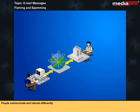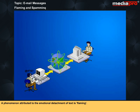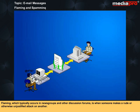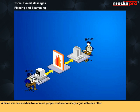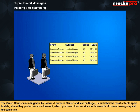People communicate and interact differently. Blunt remarks, ignoring of social boundaries, inadvertent revelation of personal information, insults and alienation all become common over computer networks. A phenomenon attributed to the emotional detachment of text is flaming. Flaming, which typically occurs in newsgroups and other discussion forums, is when someone makes a rude or otherwise unjustified attack on another. A flame war occurs when two or more people continue to rudely argue with each other. Spamming is when a user sends unwanted mass mailing to many different newsgroups or email accounts at the same time. The green card spam by lawyers Lawrence Cantor and Martha Seagal is probably the most notable spam to date, where they posted an advertisement promoting their services to thousands of Usenet newsgroups at the same time.